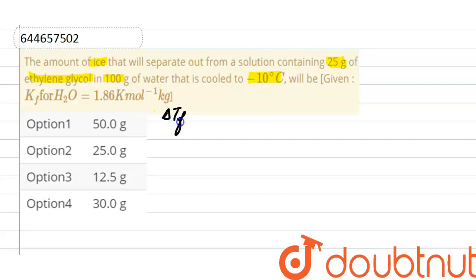First of all, what is depression in freezing point? It is equals to freezing point of solvent minus freezing point of solution. So here depression is 10 degree Celsius. Now what is delta Tf? It is equals to molality into Kf.